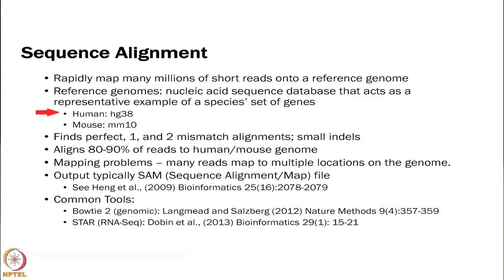For humans the current version is HG38; there is a mouse version MM10. Every species that has been sequenced has a reference genome you can look up. The alignment finds perfect matches where those 150 or 200 base pairs align to the genome, or it can allow for a certain amount of mismatches depending on the aligner and settings. Using Illumina, you can get about 80 to 90 percent of reads to map to either the human or mouse genome. Problems occur if a chunk maps to many different parts of the genome and you do not know which one it came from.